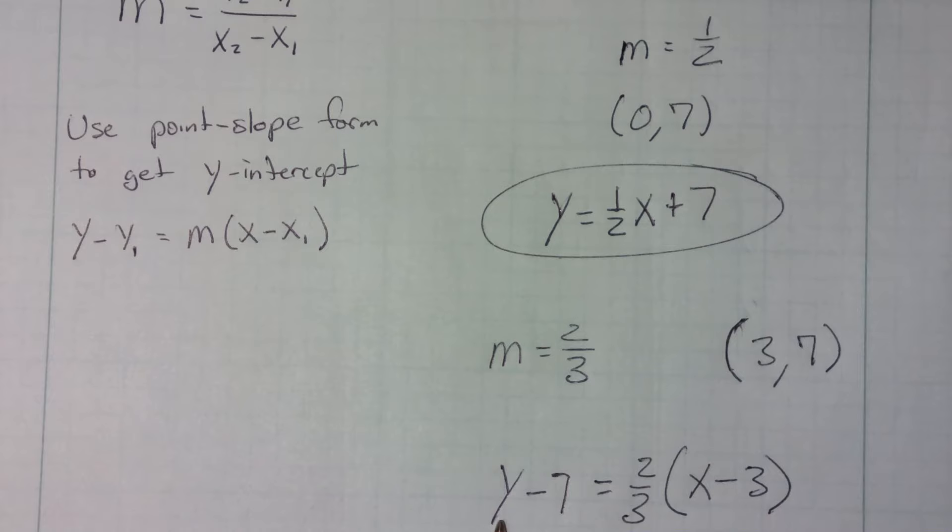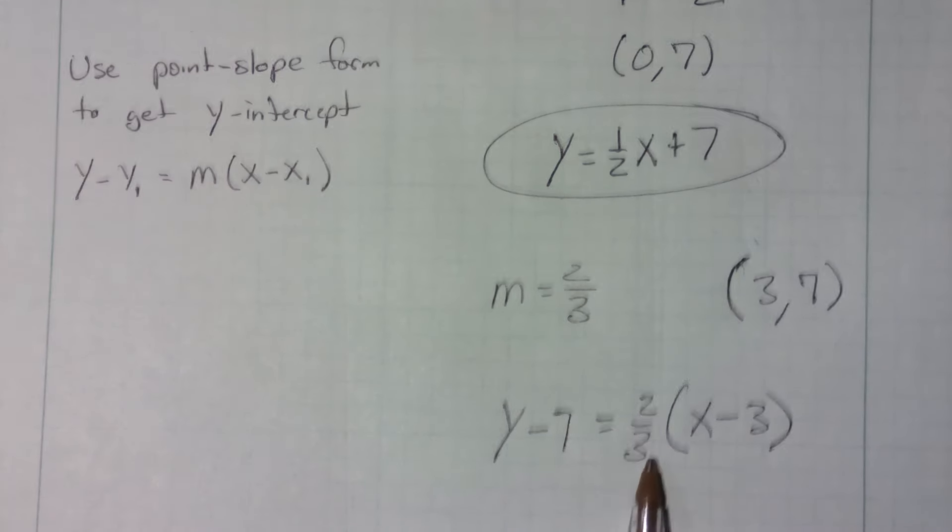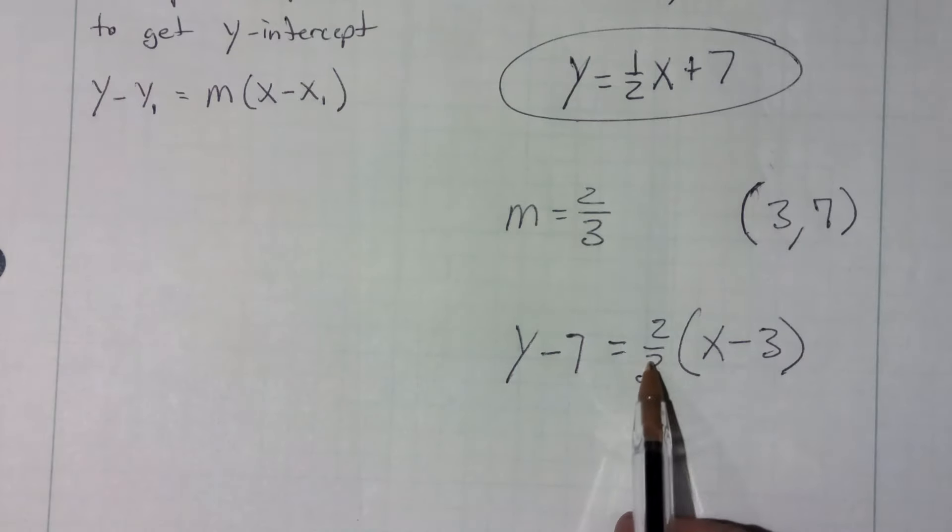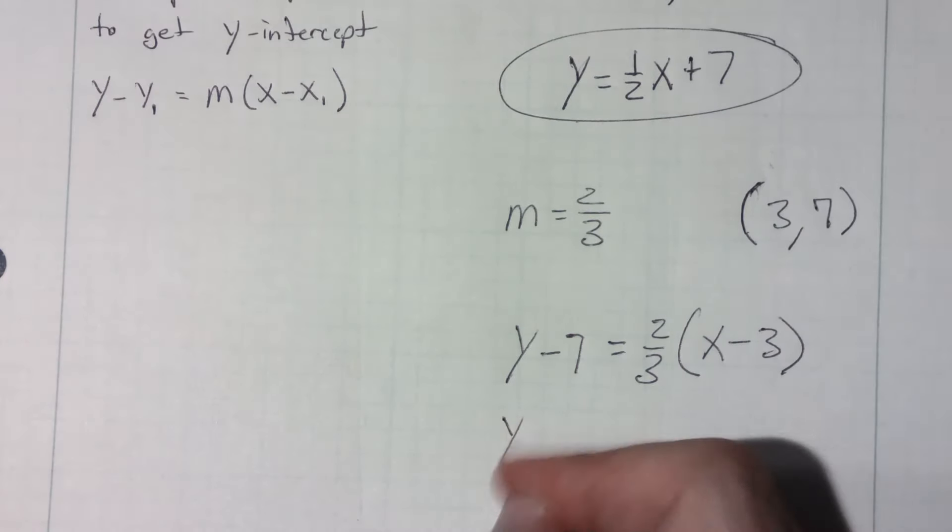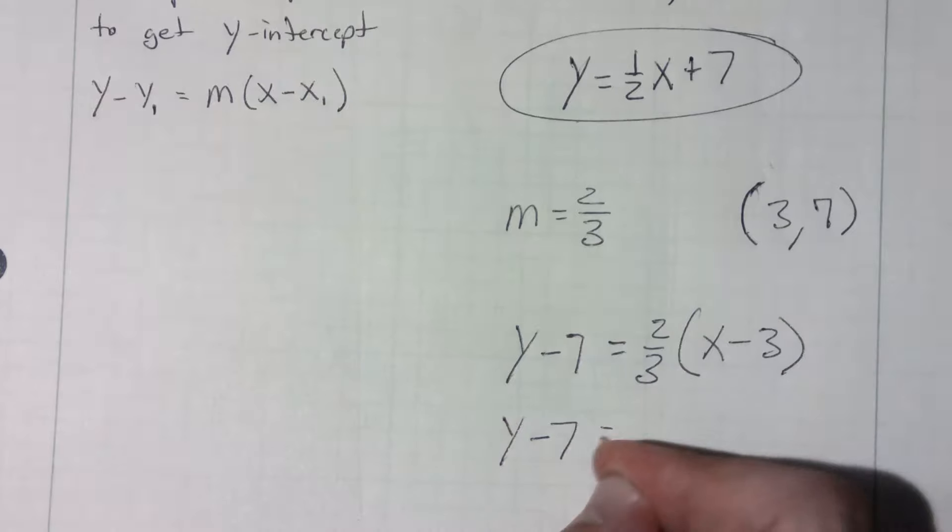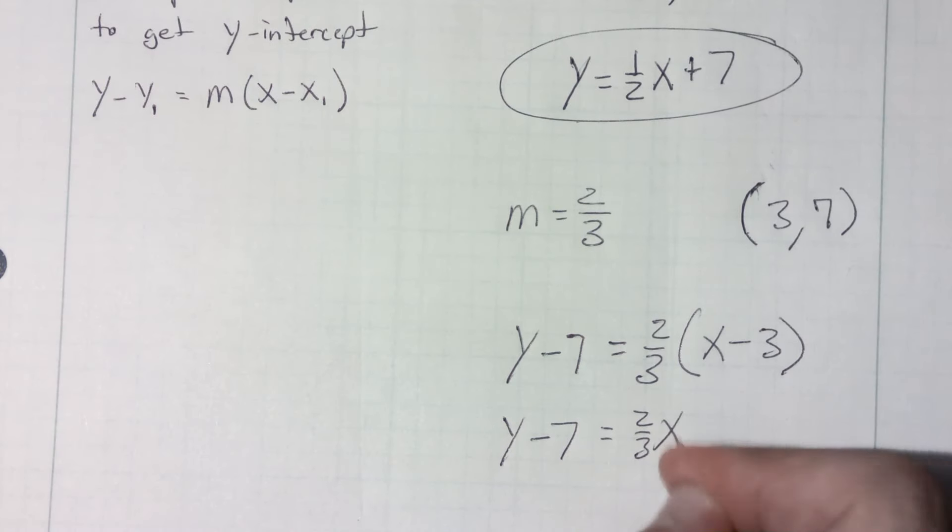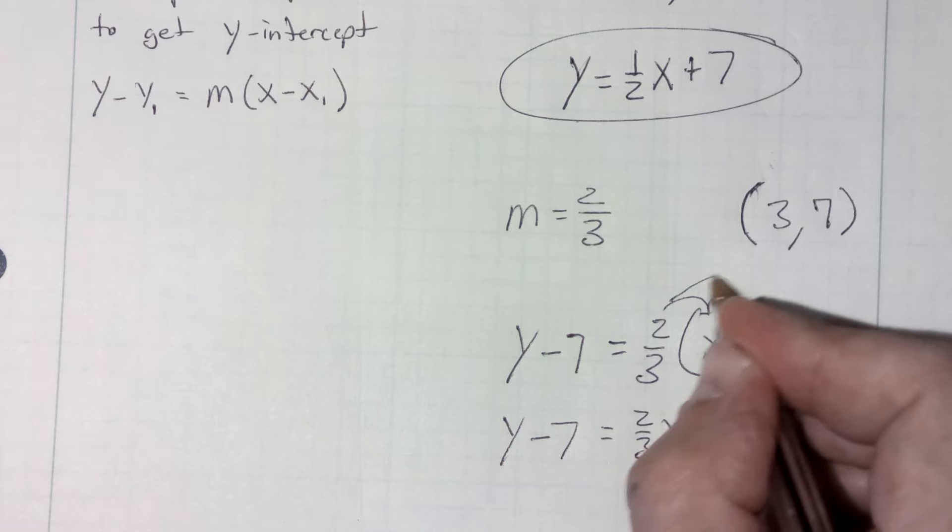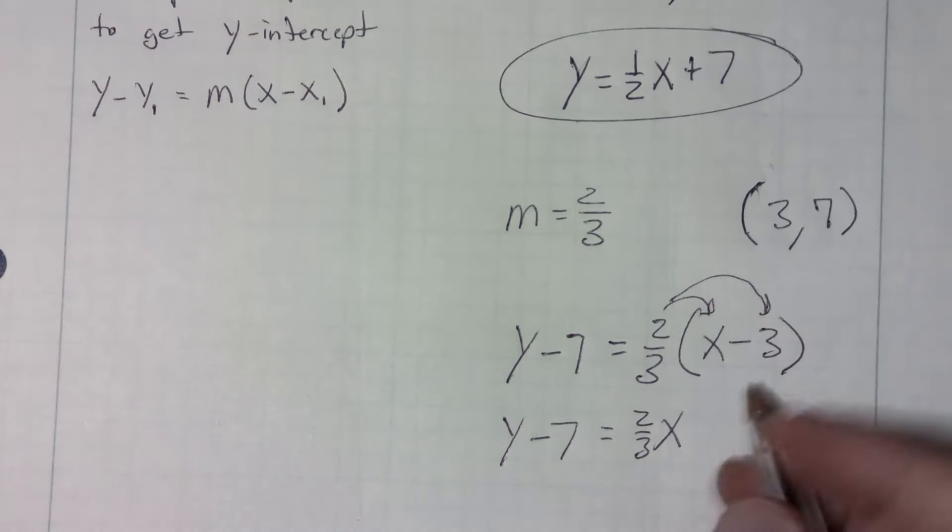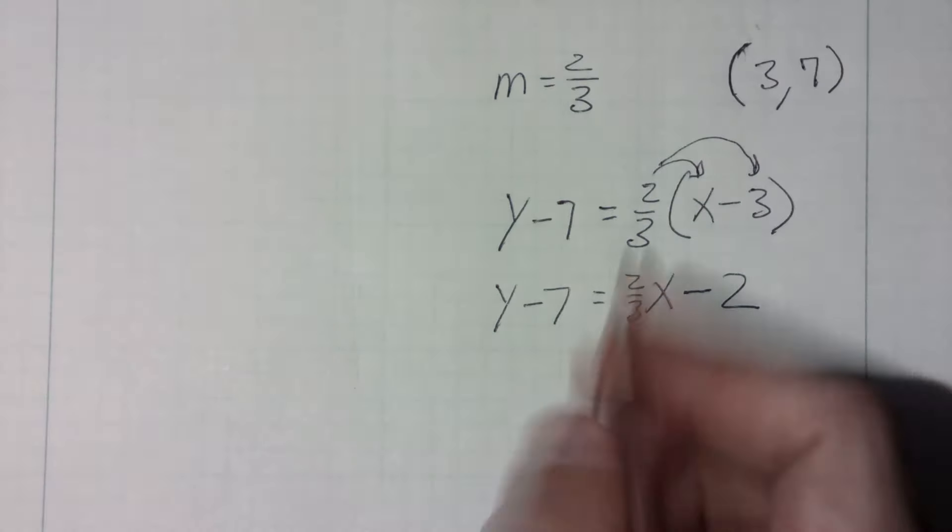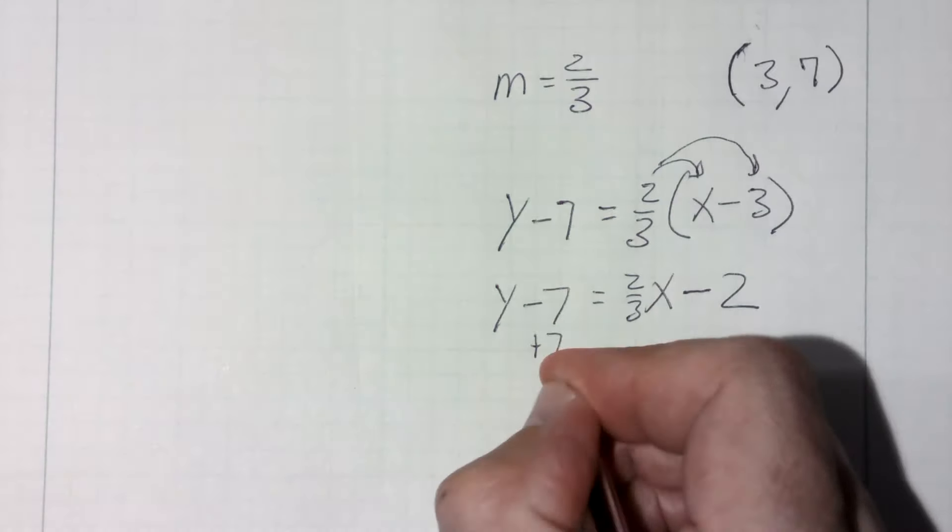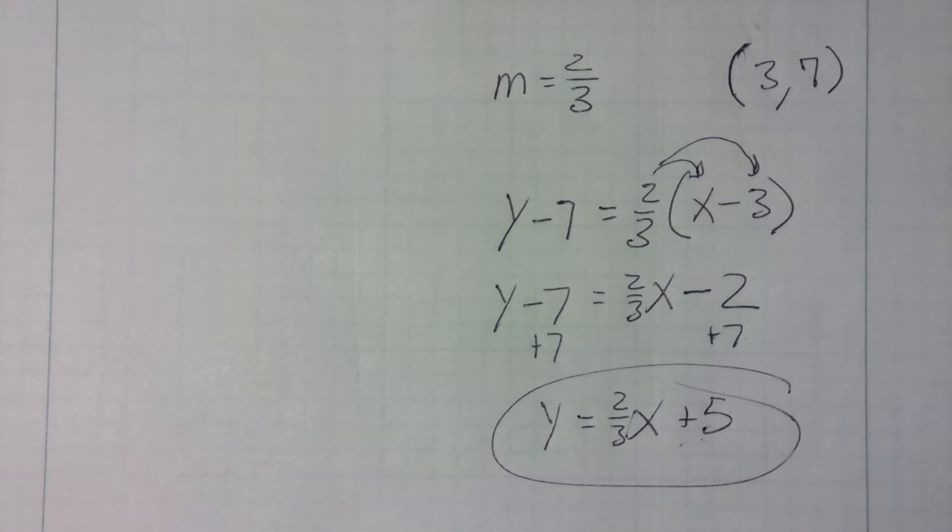Now I'm in point-slope form. I'm going to convert it by first distributing in the two-thirds. So I'm going to go y minus 7 equals two-thirds x, because I did two-thirds times x, and now I'm going to do two-thirds times my negative 3, which is then going to be minus 2. And then all I got to do is add the 7 over. Add the 7 to both sides, and I get it in slope-intercept form, plus 5. Negative 2 plus 7 is plus 5. Now I got my slope-intercept form.